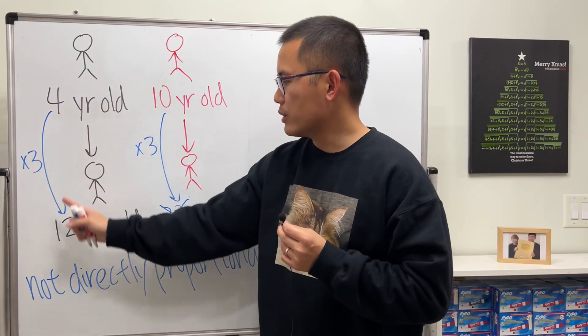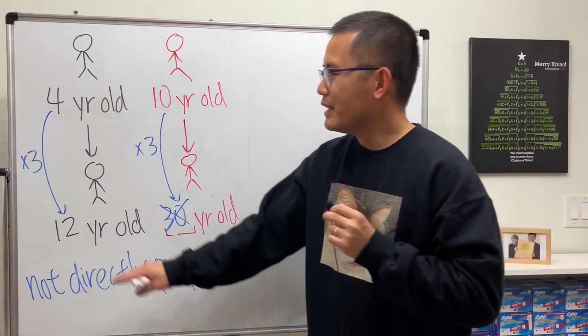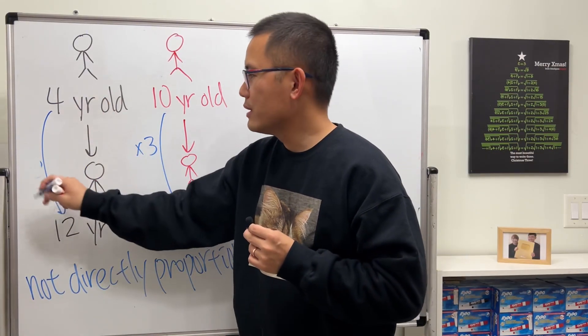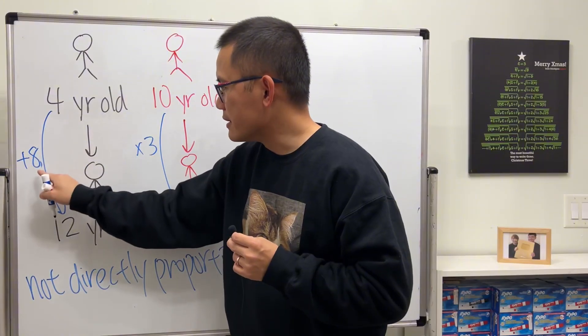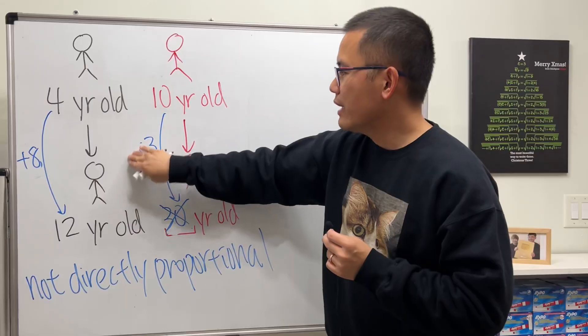So you will have to look at this as starting from four years old, after eight years we end up with 12. Same thing here: 10 years old, and then we will have to wait eight years.